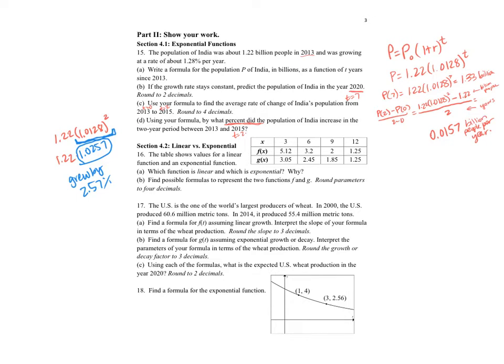This tells me that it grew by 2.57%. If I round it, it's 2.58%. 2.58% if you want to round that percent.